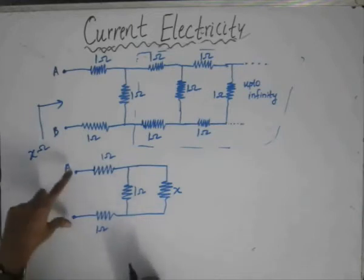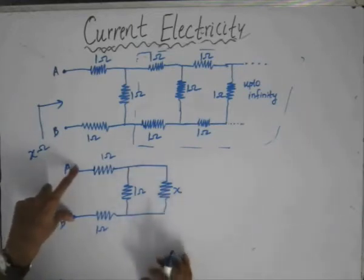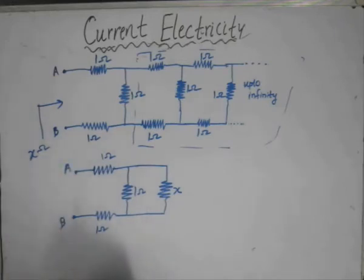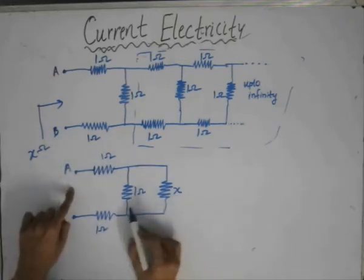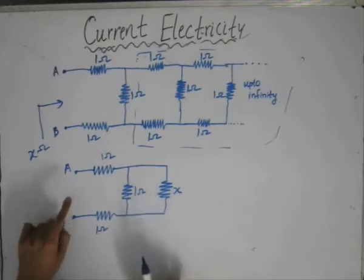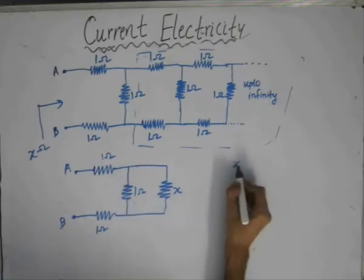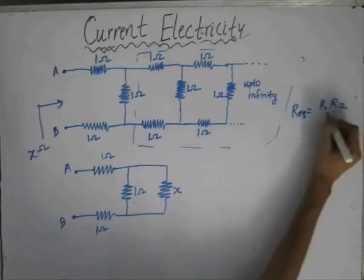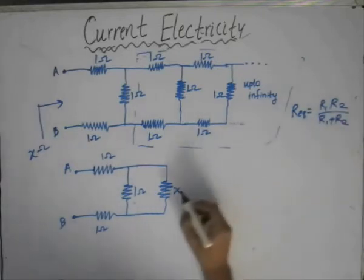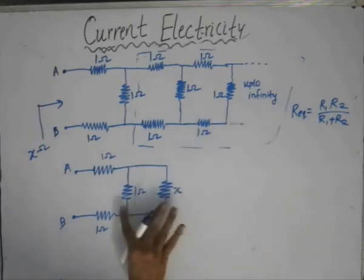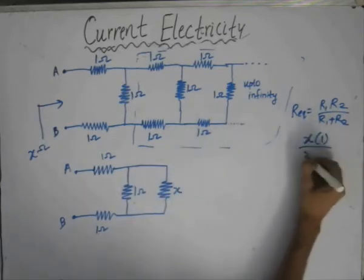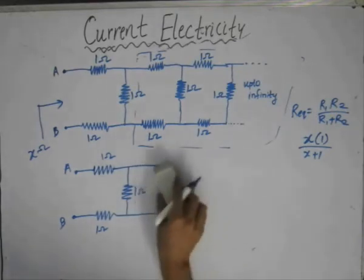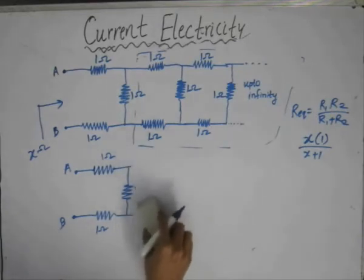Our job is to determine the value of the equivalent resistance between points A and B. From this reduced structure, it is very simple to determine the value of x. As we can see in this circuit, x ohm and 1 ohm are in parallel to each other. For the parallel case, the equivalent is R1·R2 divided by R1 plus R2. So the parallel combination of these two resistors would be x·1 divided by x plus 1, giving x/(x+1).